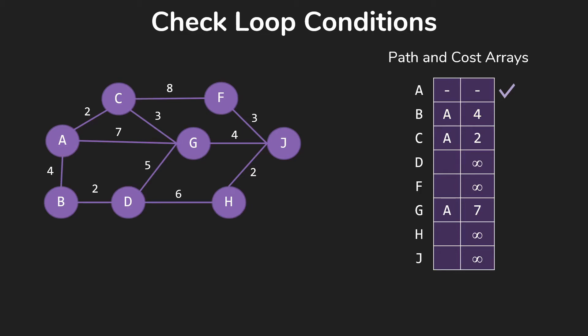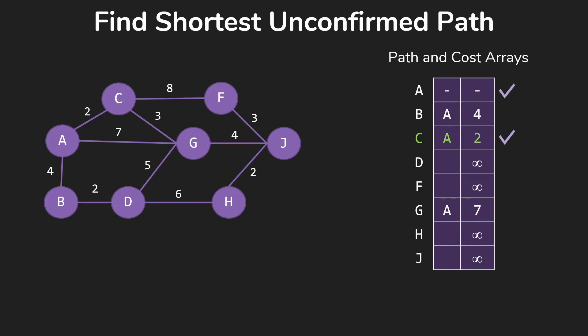Now we're going to check our loop condition. We're not done. We keep going. We're going to go through our array. Now notice we have to go through all the items in the array, checking for where's the shortest one that we haven't confirmed the path. And so in this case, that's going to be C from A for 2. So we confirm that path. We're done with C. Never going to change our minds. We're never going to find a better path to C at this point.